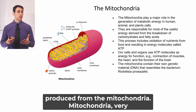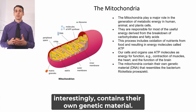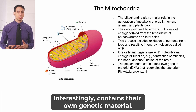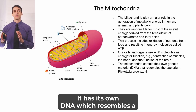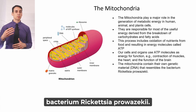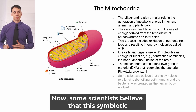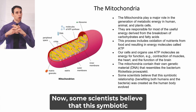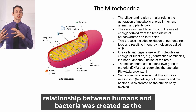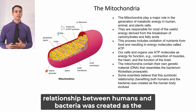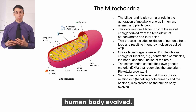Mitochondria very interestingly contains its own genetic material — it has its own DNA, which resembles a bacterium called Rickettsia prowazekii. Some scientists believe that this symbiotic relationship between humans and bacteria was created as the human body evolved.